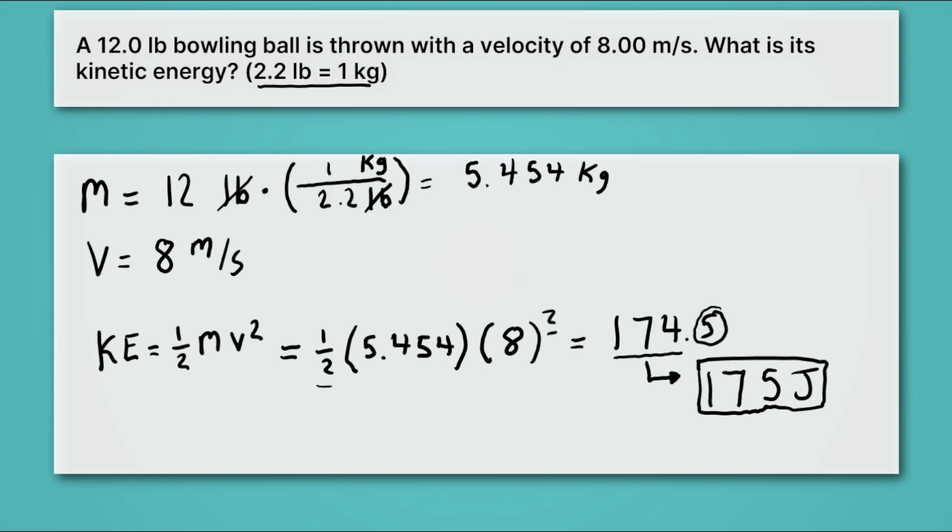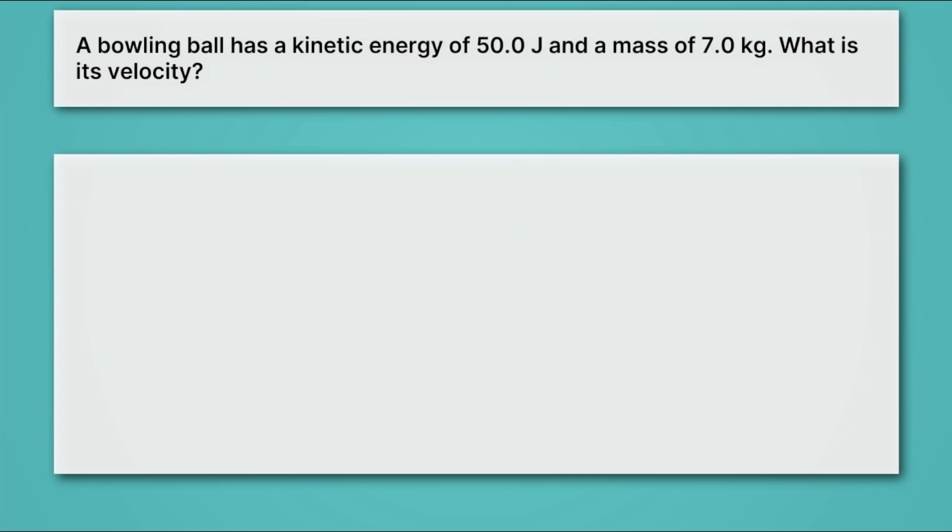Okay, now let's take a look at one more problem. Here we're told a bowling ball has a kinetic energy of 50 joules and a mass of 7 kilograms. What is its velocity? Okay, let's start again by writing down the variables we know. And in this case, we're actually given kinetic energy. And we're told that it's 50 joules. Good enough. And we're also told that the mass is 7 kilograms. Okay, so we have mass and kinetic energy, but we want to know its velocity now.